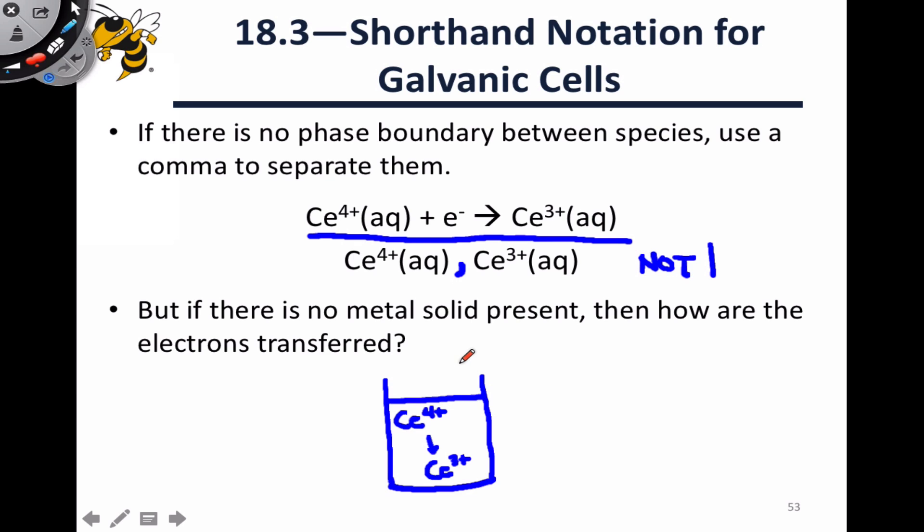And that's going to involve a wire that's going to transfer electrons into this solution that cerium 4+, can combine with, essentially. We do want to incorporate this so-called inert electrode into our cell notation. Just because if someone were to go and try to reconstruct this cell, they would need to know what material that inert electrode was made out of. There is a phase boundary between the inert electrode and the aqueous solution, and we want to account for that in our cell notation.